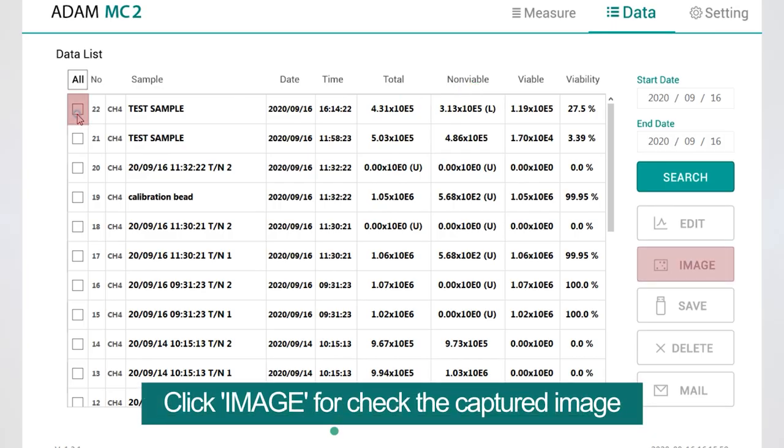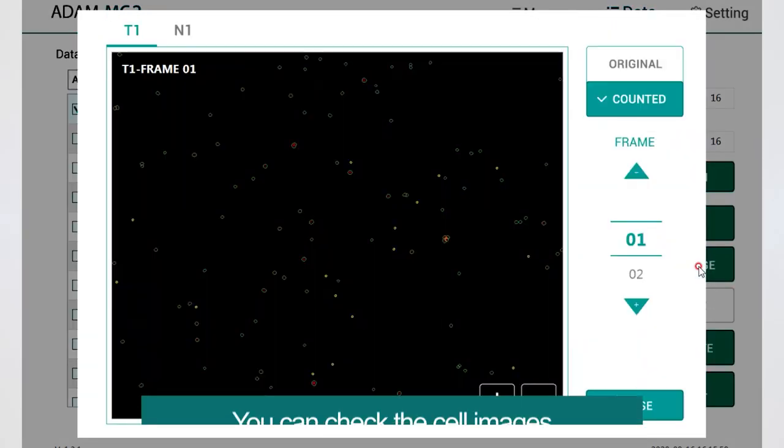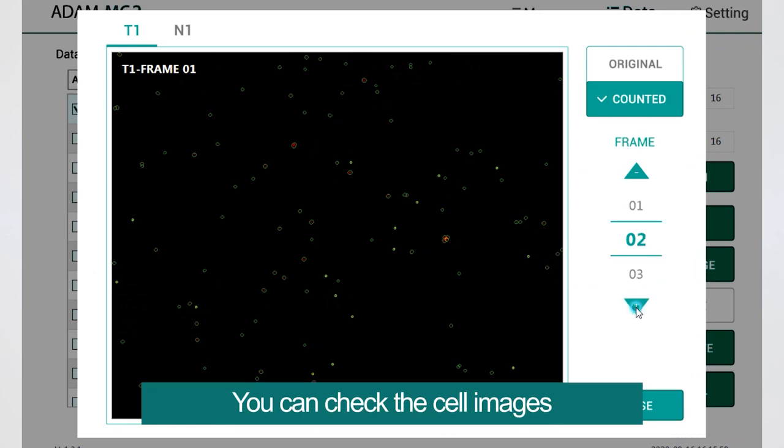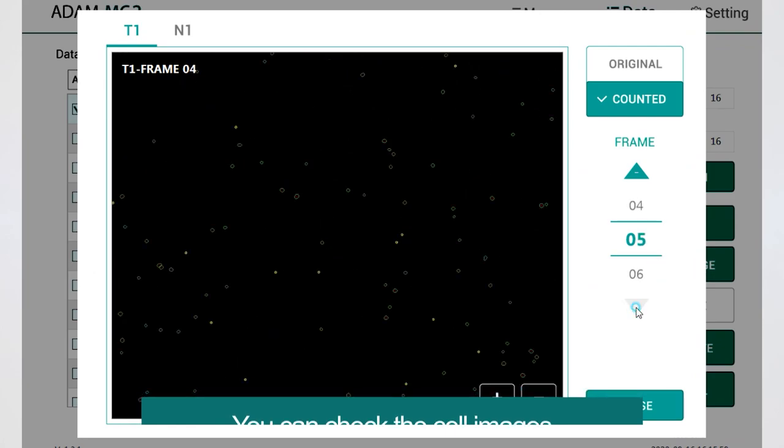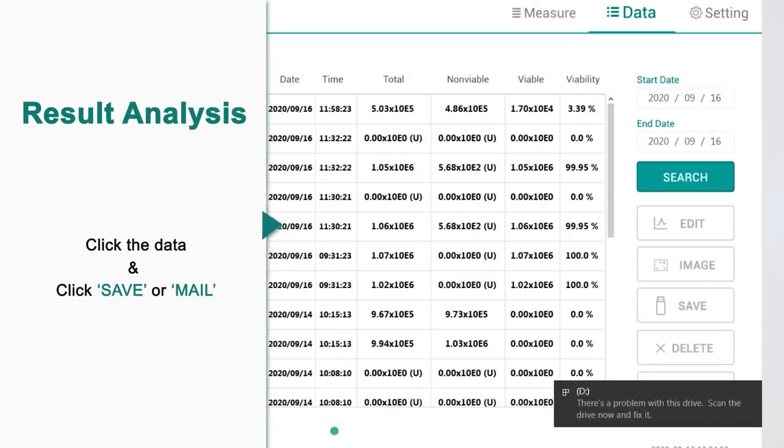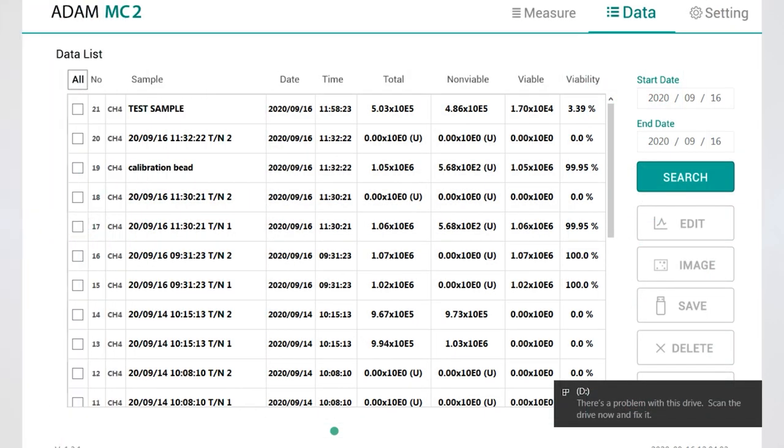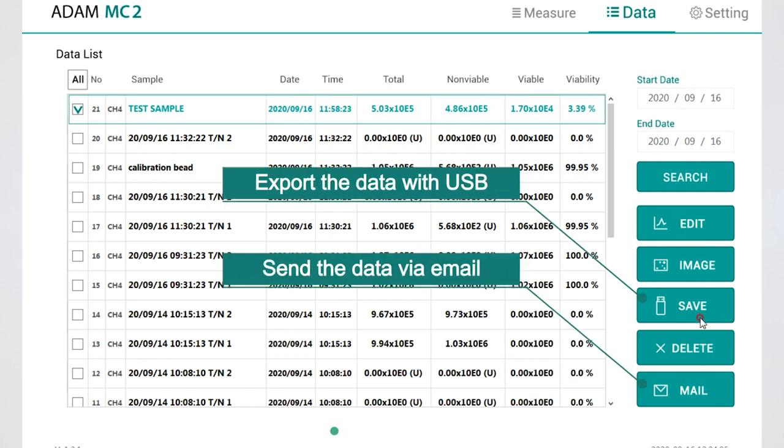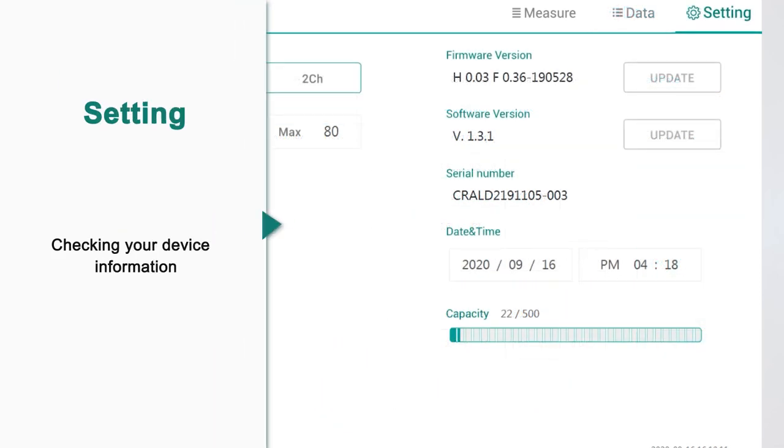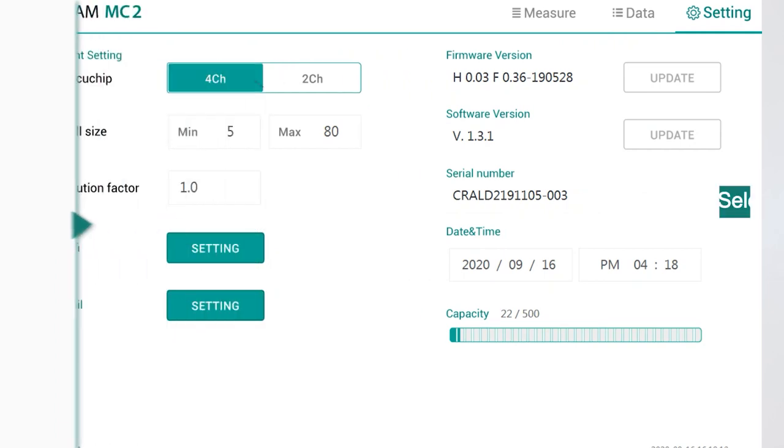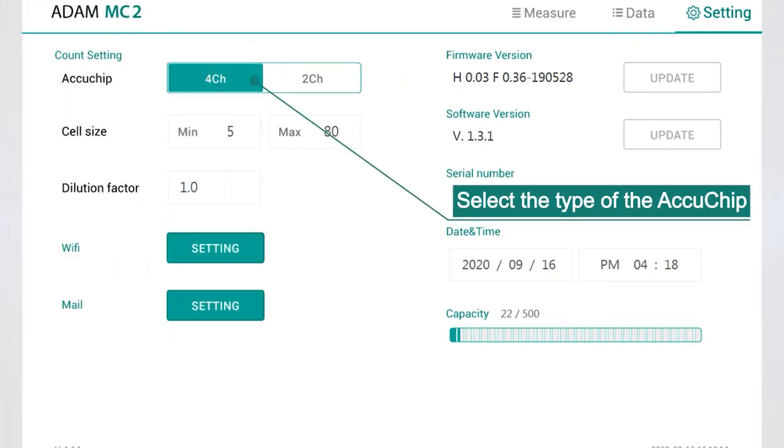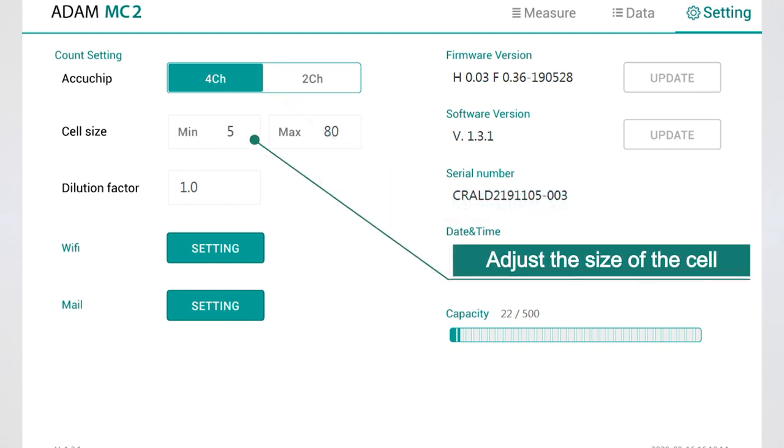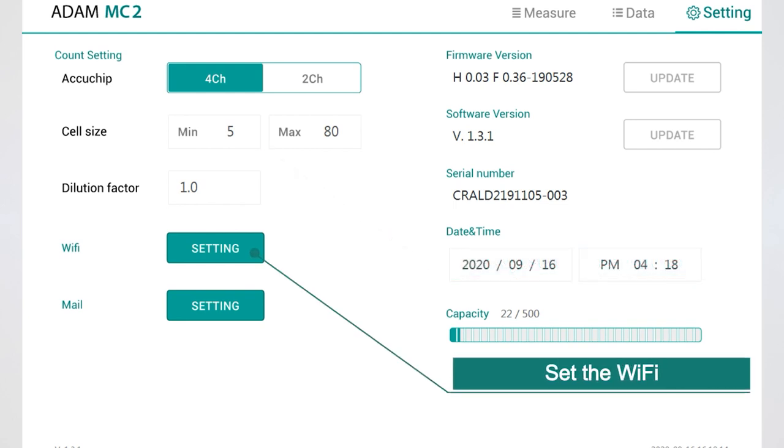You can select the type of the AccuChip, adjust the size of the cell, set the Wi-Fi, and check the device information.